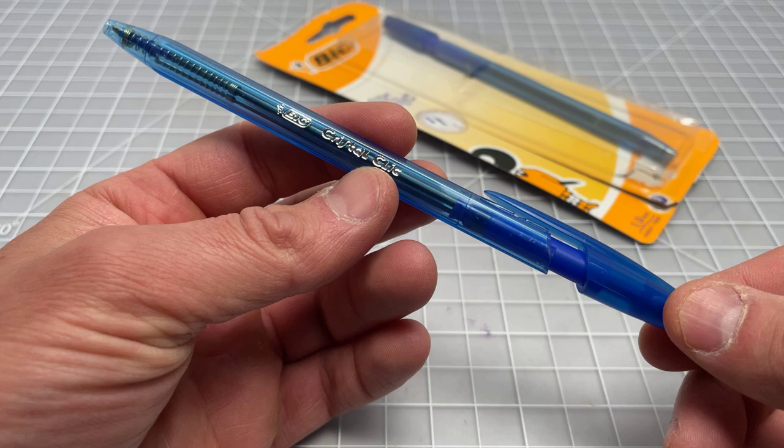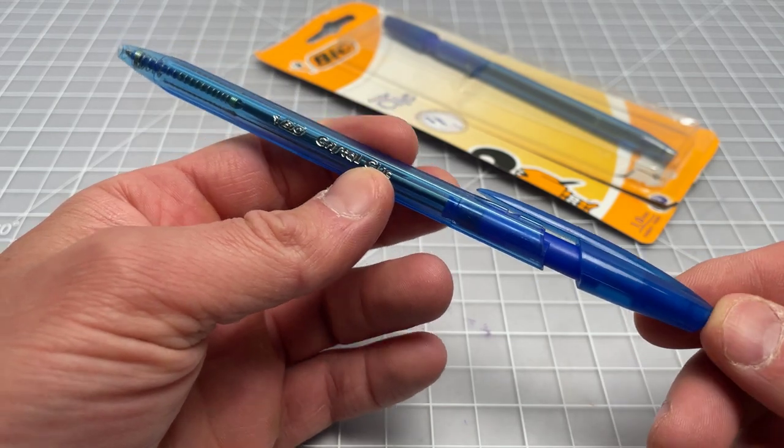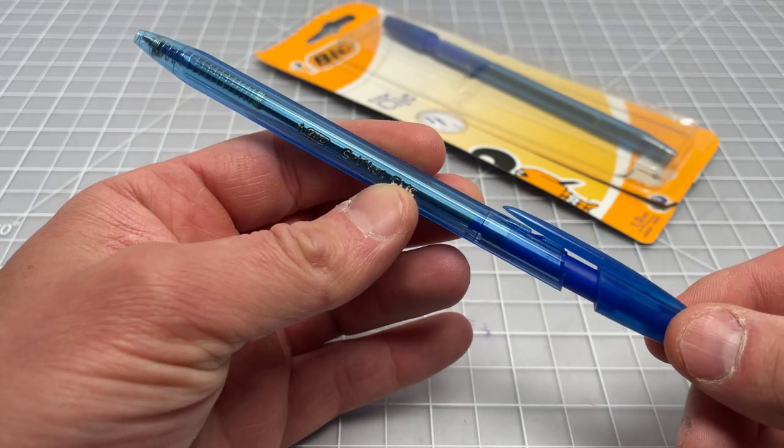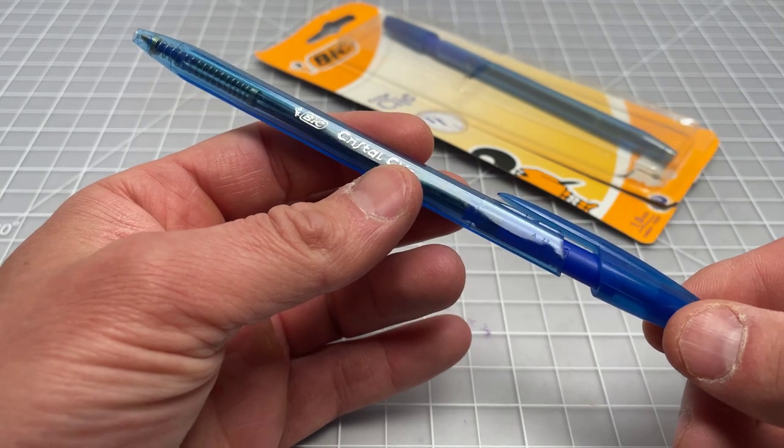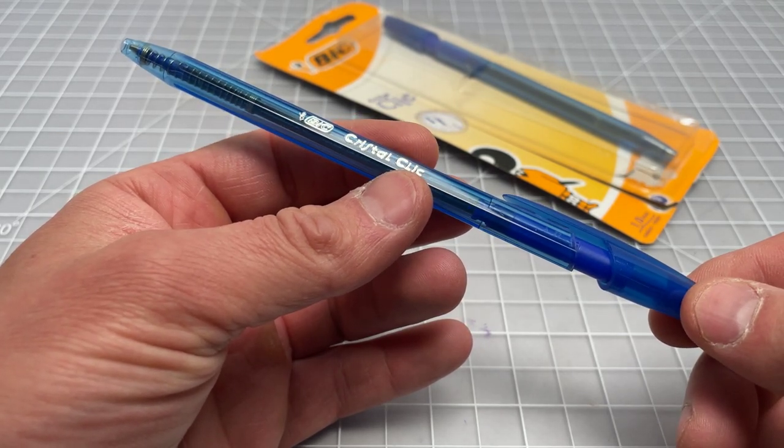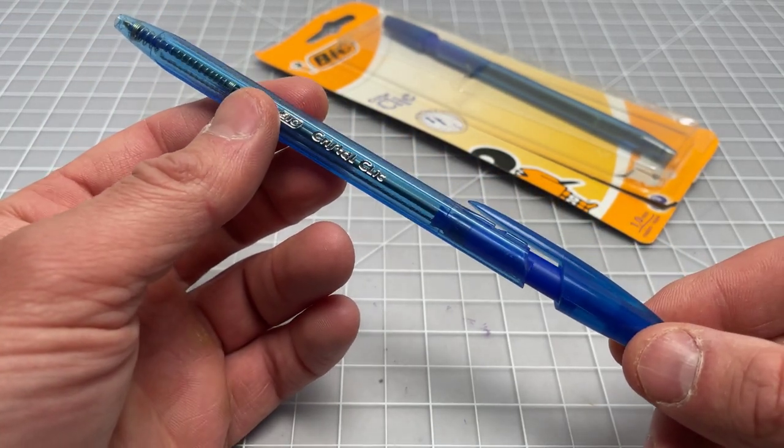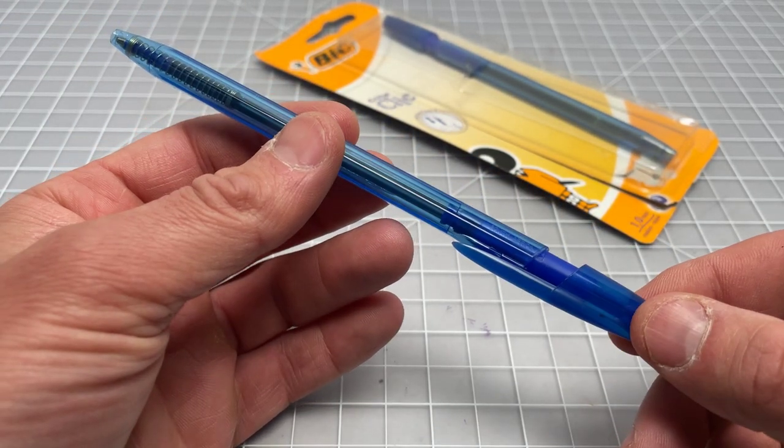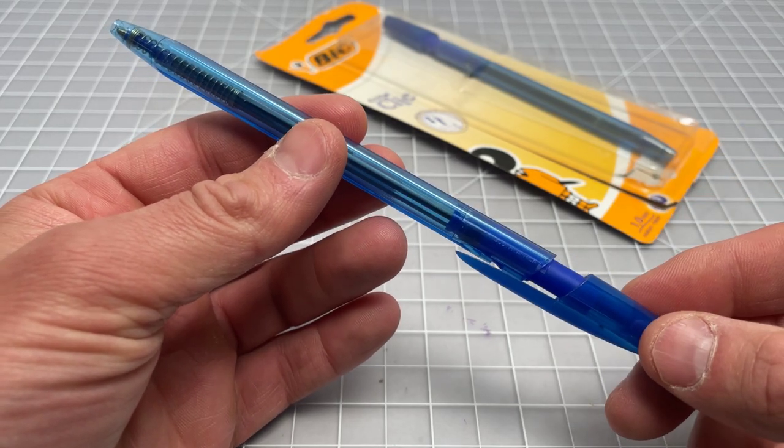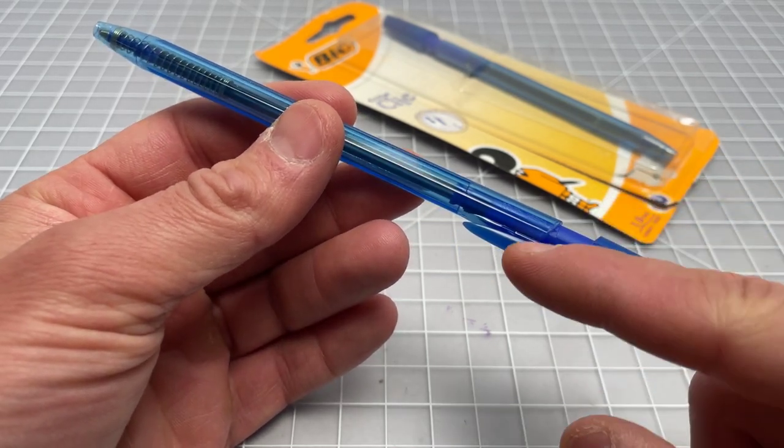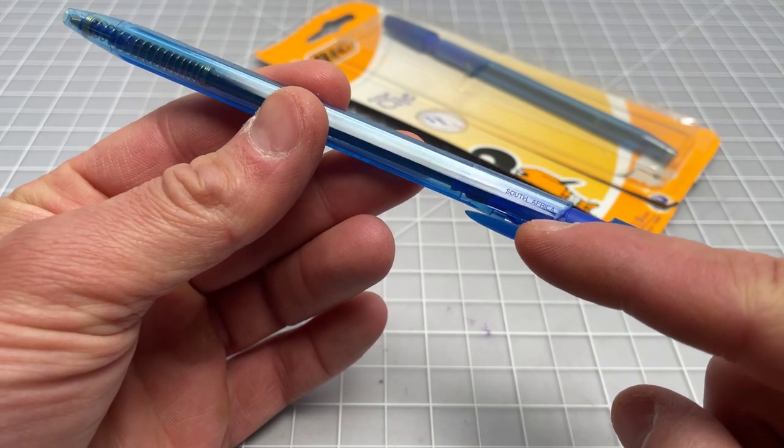This is the Bic Crystal Click. It is a clicky pen that follows the basic design of the classic Bic Crystal. This pen I don't believe is sold in the U.S., which is probably why people have asked me about it. But I believe it's typically sold in the U.K.